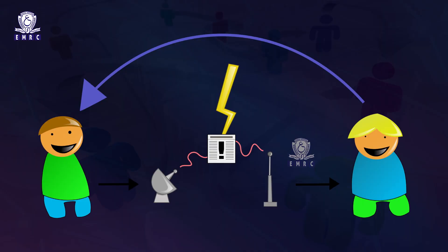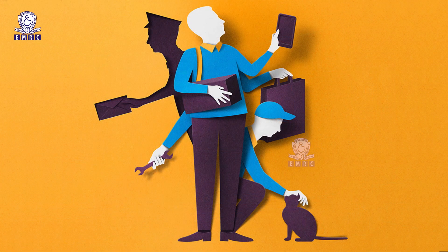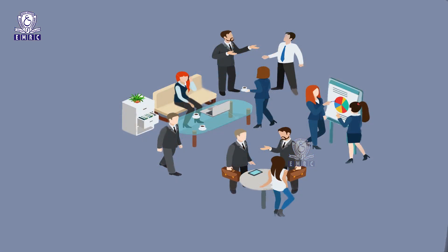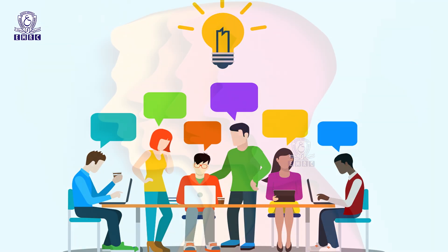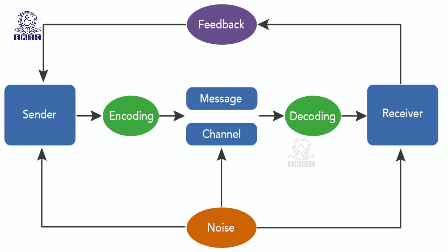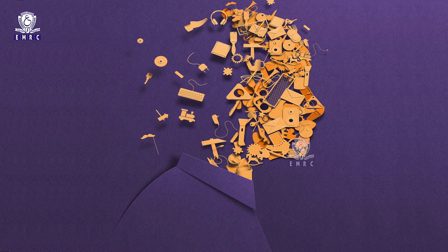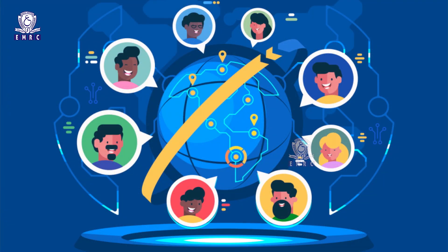Despite the best intentions of sender and receiver to communicate, several barriers inhibit the effective exchange of information. Any disturbance or hindrance that affects the process of communication may be referred to as barriers to communication. Barriers to communication are also referred to as noise in communication. The process of communication begins with the sender encoding or drafting the message, then choosing the right channel or medium to send it to the receiver, who decodes the message, and the whole process is completed only after the receiver sends feedback to the sender. It is vital to understand this process as barriers can occur at any stage.